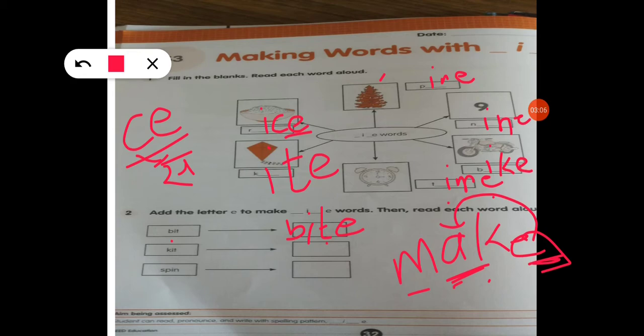And E has given its power to the I letter. So I letter's sound becomes I, its letter name. So bite. Bite means to cut. Bit also means to cut.